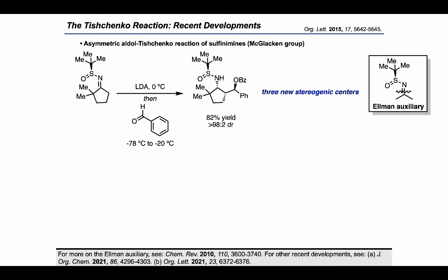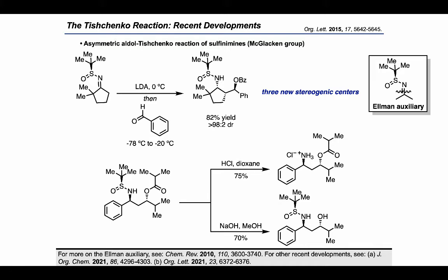More recently, a noteworthy asymmetric aldol-Tyshenko reaction was reported by the McLaughlin group, who used the Elman auxiliary to guide the formation of three new stereocenters. In this example, benzaldehyde was used as the electrophile for the aldol reaction, as well as the aldehyde for the subsequent Evans-Tyshenko step. Importantly, the authors were also able to show that the Elman auxiliary and the ester furnished in the aldol-Tyshenko reaction could be selectively removed using acid or base, respectively.